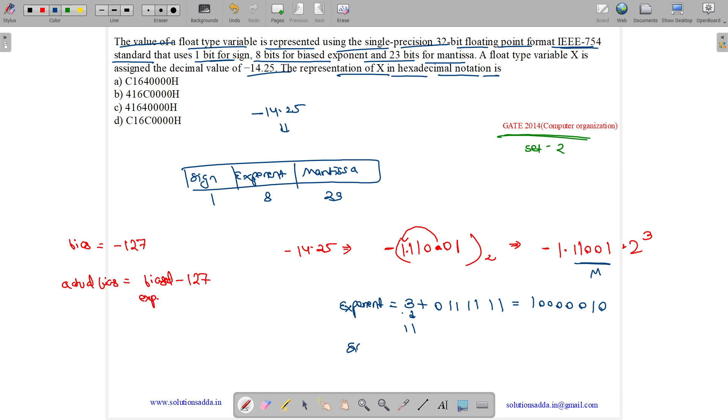And what is our sign? This is a negative number. So for negative number, sign is 1. So our representation would be SEM. Sign is 1. Exponent is 1, followed by 5 zeros, then 10. And mantissa.